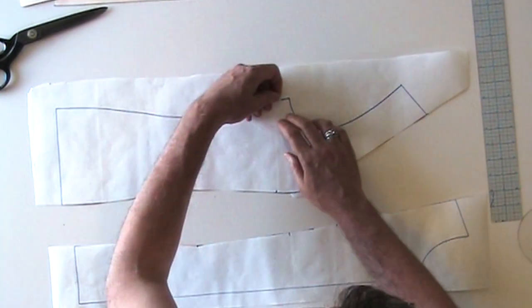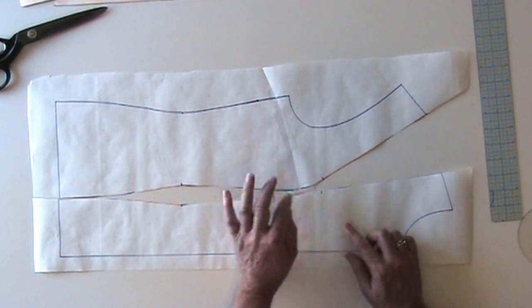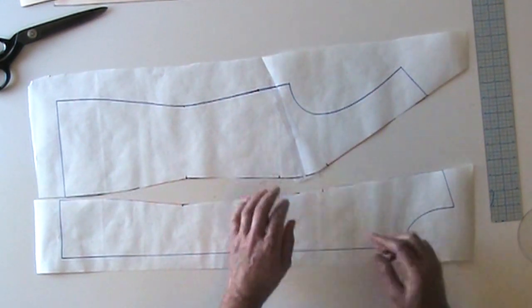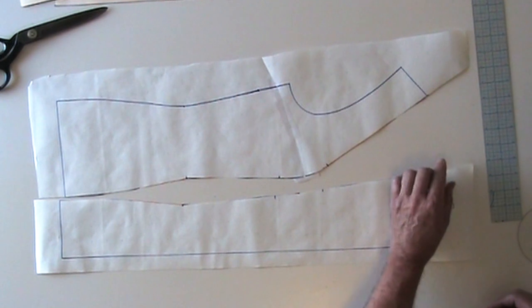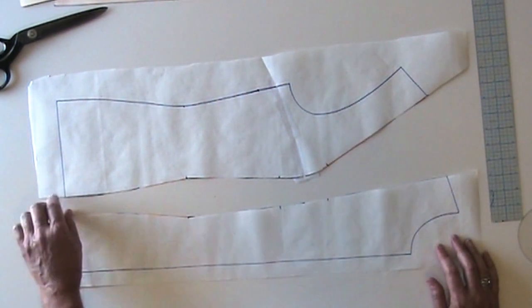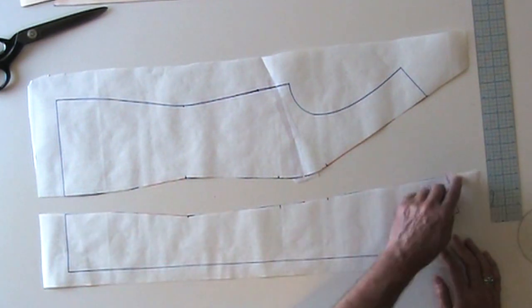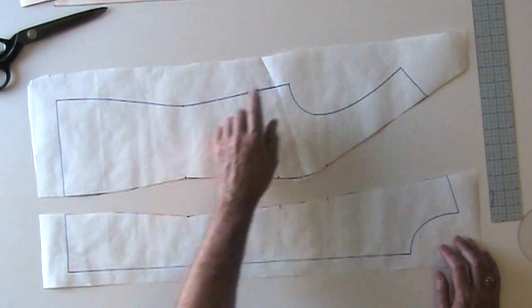I'm doing that in this case because my princess seam is right over the apex. Now I need to take some additional paper along these edges so I can add seam allowance to this inner seam and then draw seam allowance around the outside.